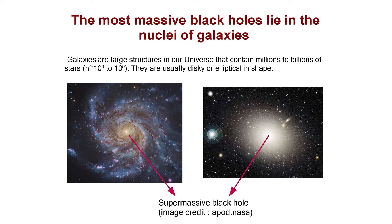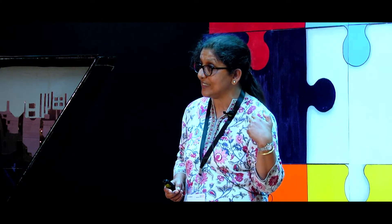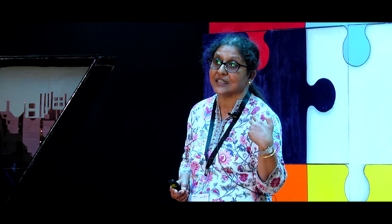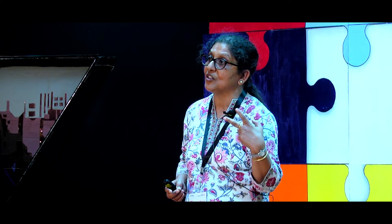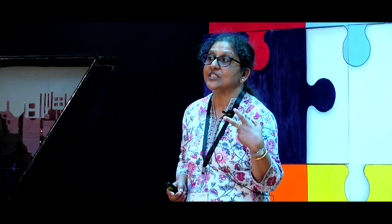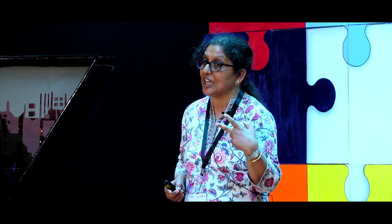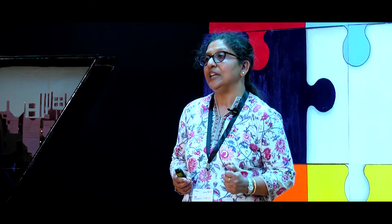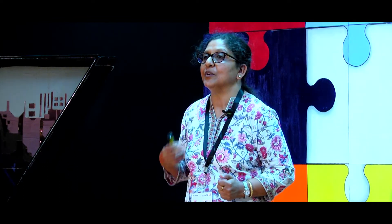The most massive black holes in our universe lie at the centers of galaxies. There are spiral galaxies and elliptical galaxies. The elliptical galaxies have the most massive black holes. The two supermassive black holes I'll show you today — the first lies in the center of our galaxy, which is a spiral galaxy, and the second lies at the center of M87, an elliptical galaxy and the most massive galaxy in our nearby neighborhood.